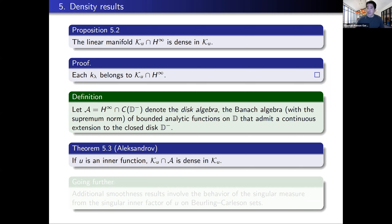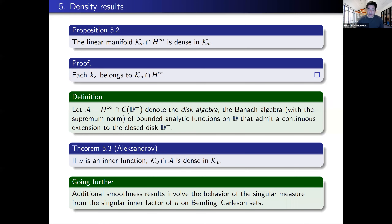You can push this much further. The notes which will be provided will talk quite a bit more about this — you can talk about criteria which guarantee additional smoothness, say continuity of the first derivative, second derivative, etc. It turns out to be a lot more complicated story, and those results tend to involve the behavior of the singular measure coming from the singular inner factor and how they behave on so-called Beurling-Carleson sets. It's a little bit technical so I'm going to push that to the notes or the book chapter.